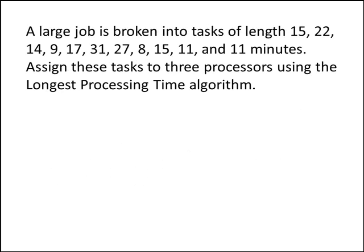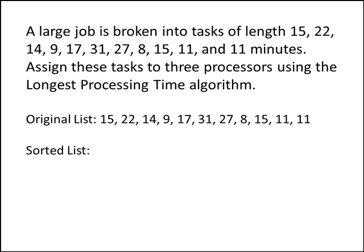So let's do this problem. Remember that our first step was to sort the list of tasks from largest to smallest. There's our original list in the order given in the problem, and now we're going to put together a sorted list. We'll go down our list of tasks and find the largest number, which will be first on our sorted list. I recommend crossing out the tasks as we write them on our sorted list — this way you avoid duplicating and hopefully avoid missing a task.